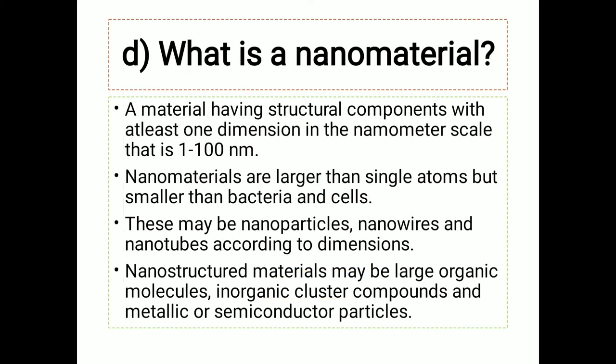What is meant by nanomaterial? A nanomaterial is a material having structural components with at least one dimension in the nanometer scale — that is, in the range of 1 to 100 nanometers, where 1 nanometer is 10 raised to the power minus 9 meters.